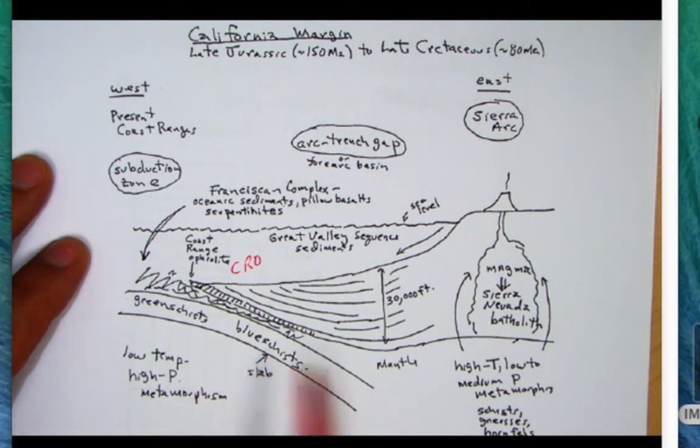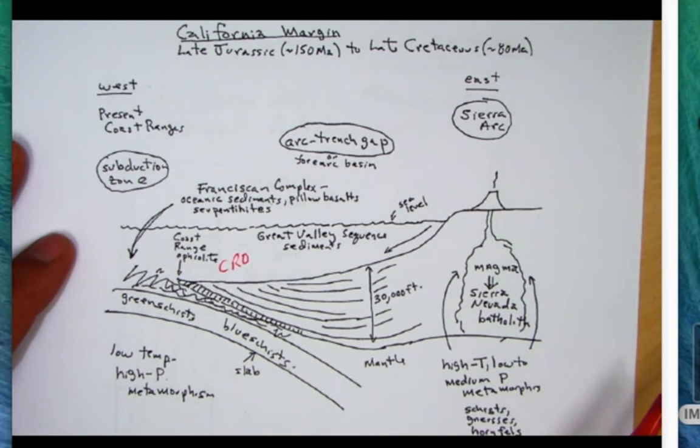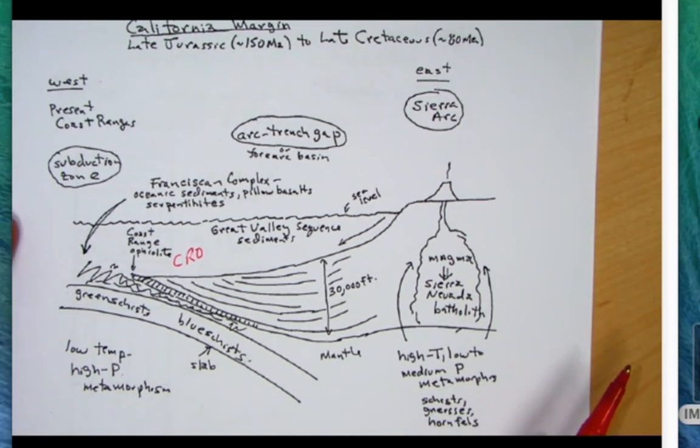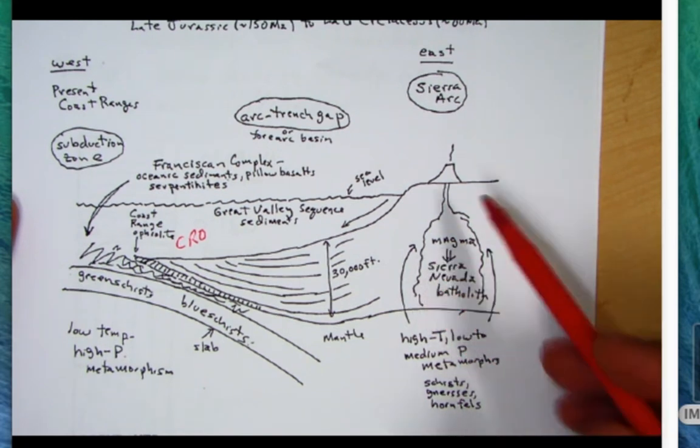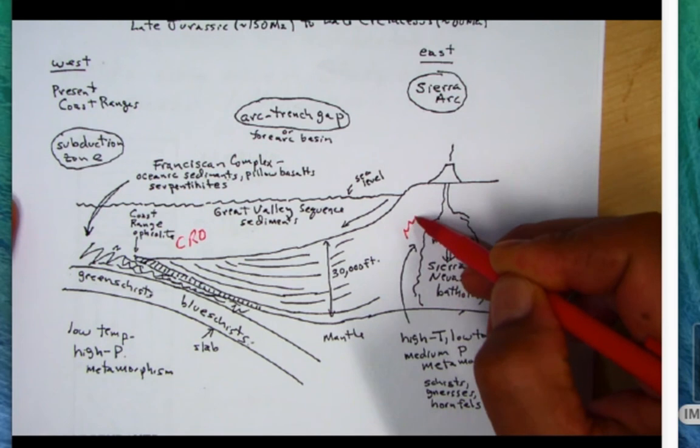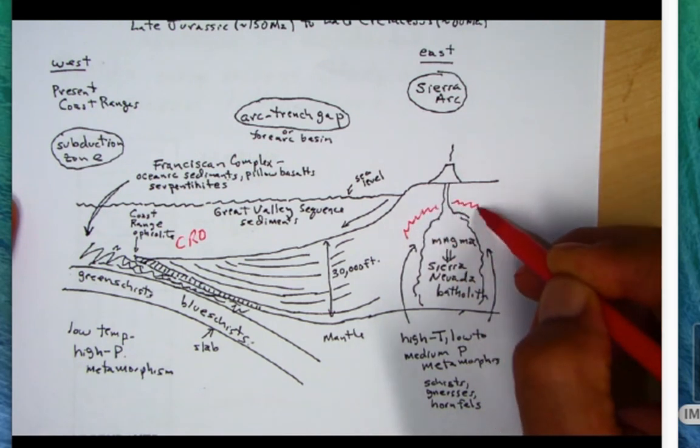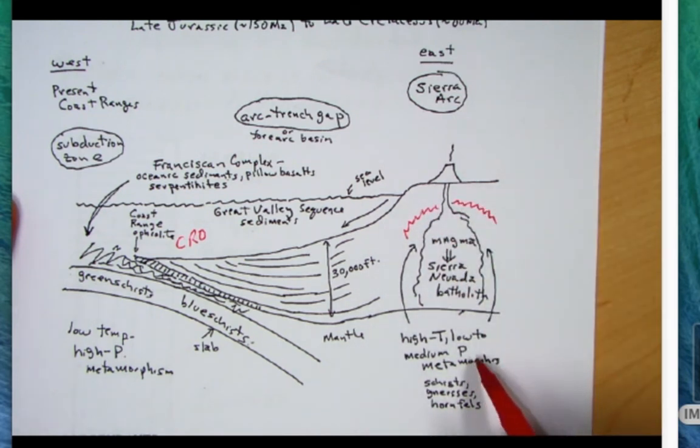As we go over to the Sierra arc, because of the batholith these magmas are coming up, there's going to be a region around here where there's going to be metamorphism. That's where you're going to have this contact metamorphism where there's high temperature and low to medium pressure.